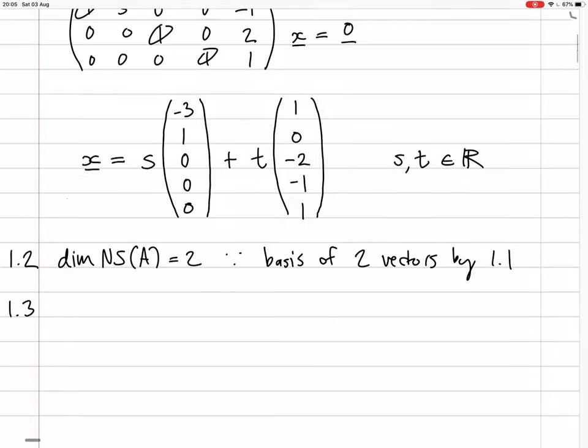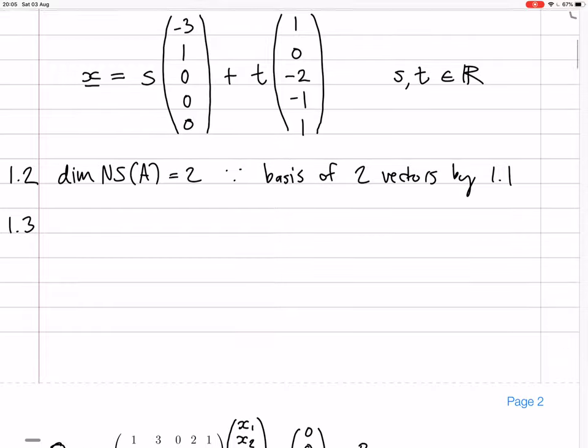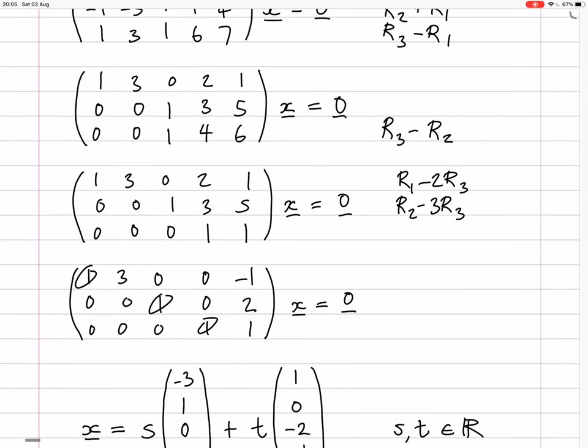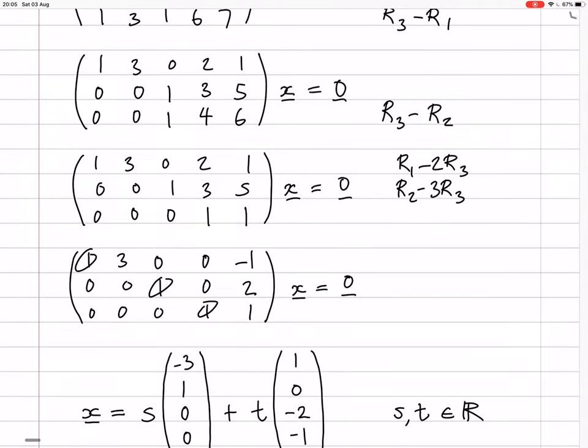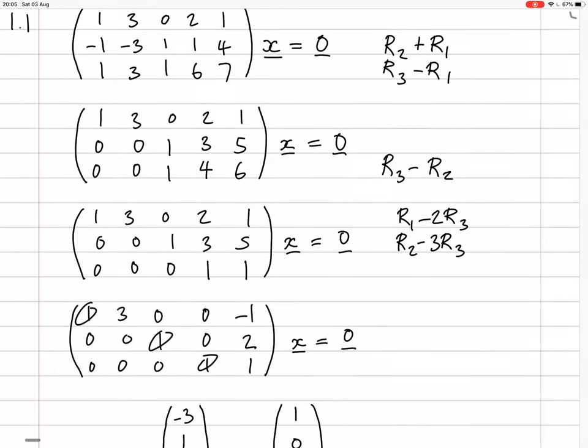Question 1.3: Write down a linearly independent set of three vectors chosen from the five given vectors, which are the columns of A. We choose the three vectors corresponding to pivot columns: the first, third, and fourth vectors.